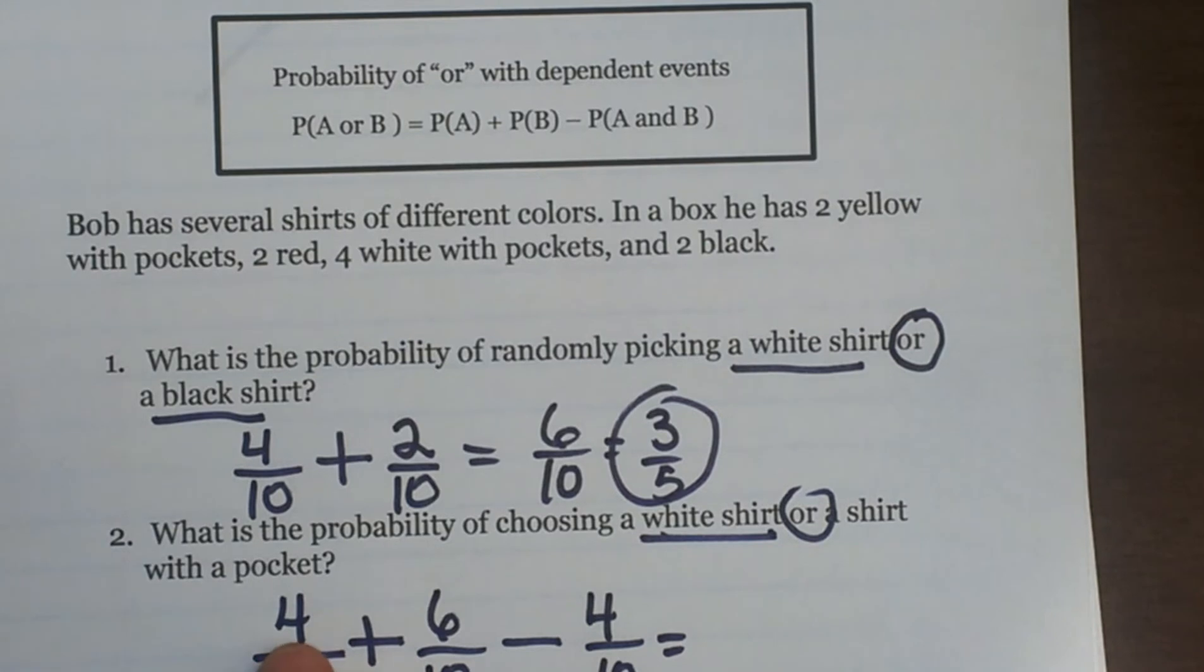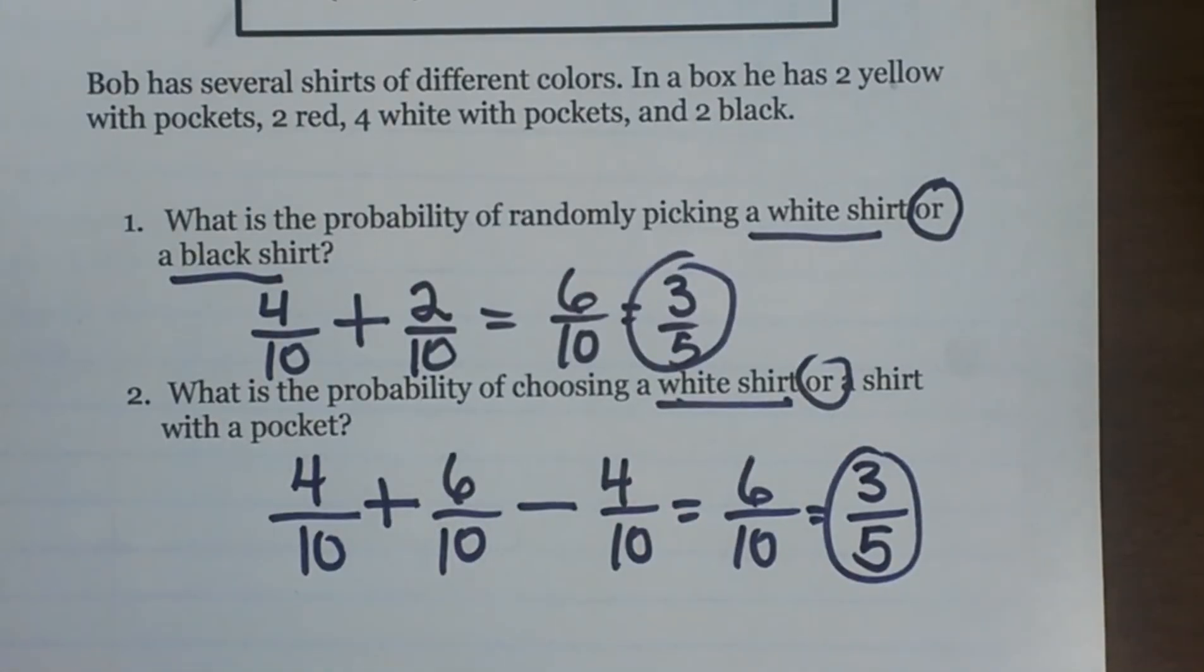So let's go through and add this all up. That's four plus six is ten tenths minus four tenths. We are back to six tenths. So the probability of that occurring would be three fifths. And that is how you would figure that one out.